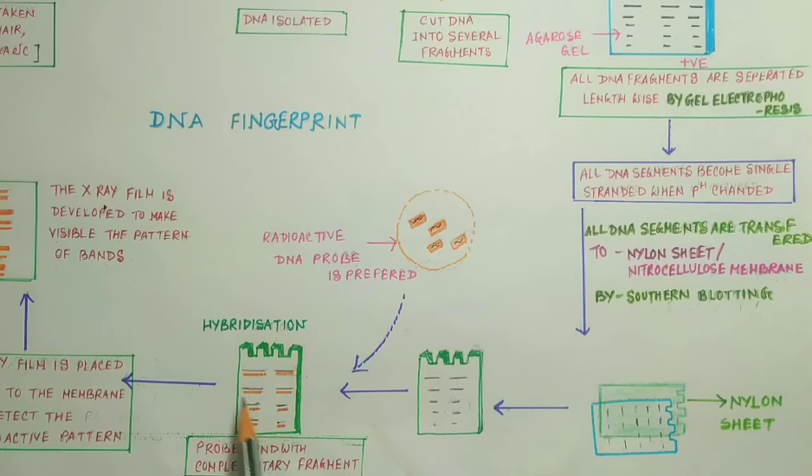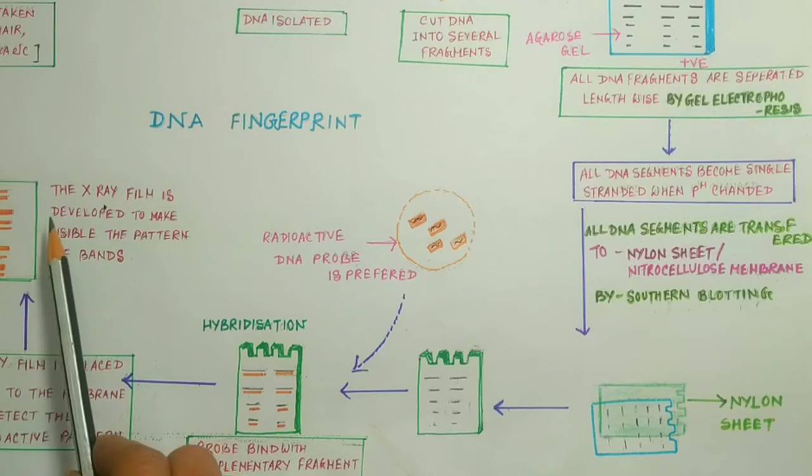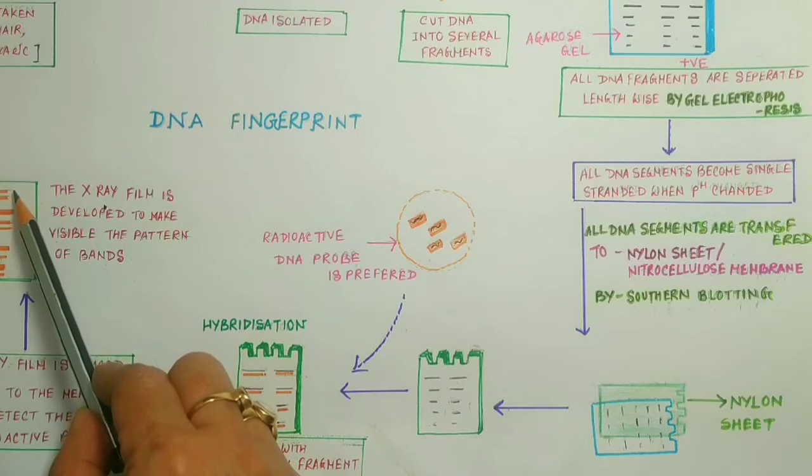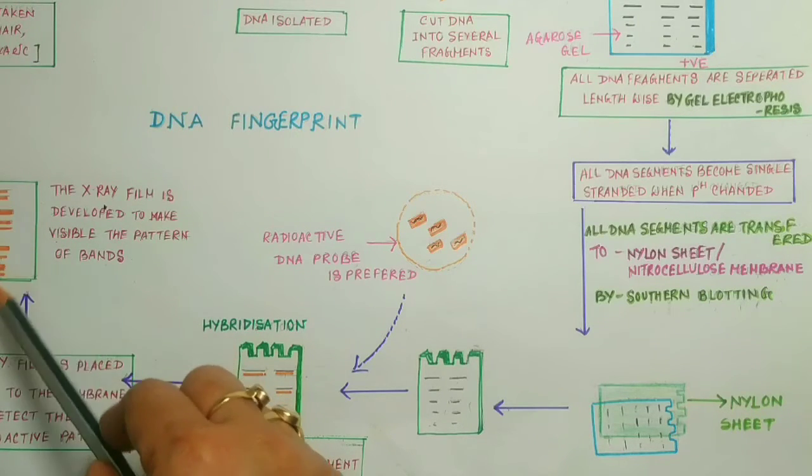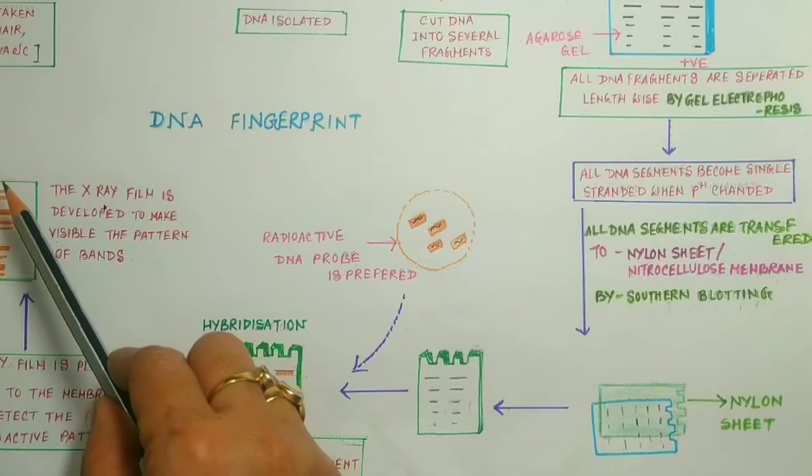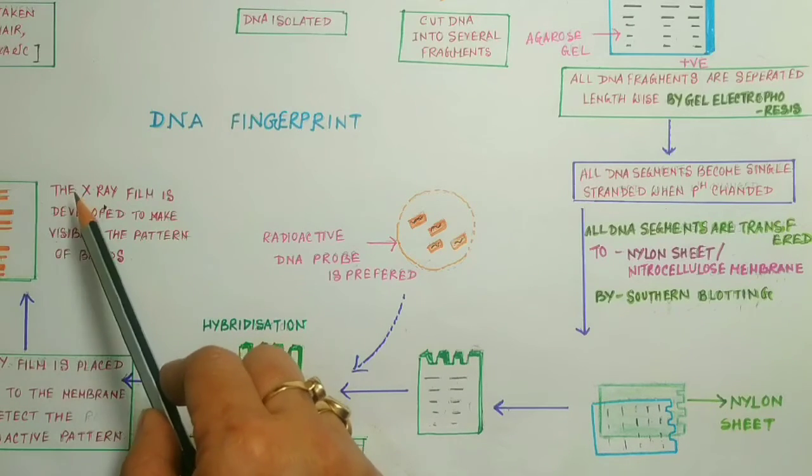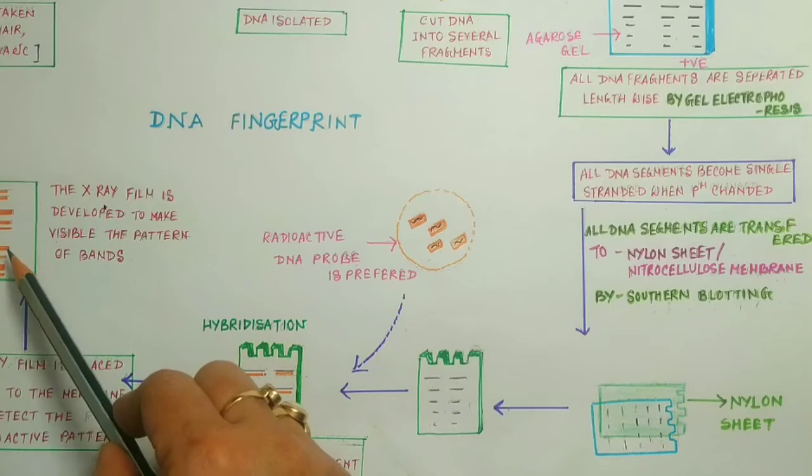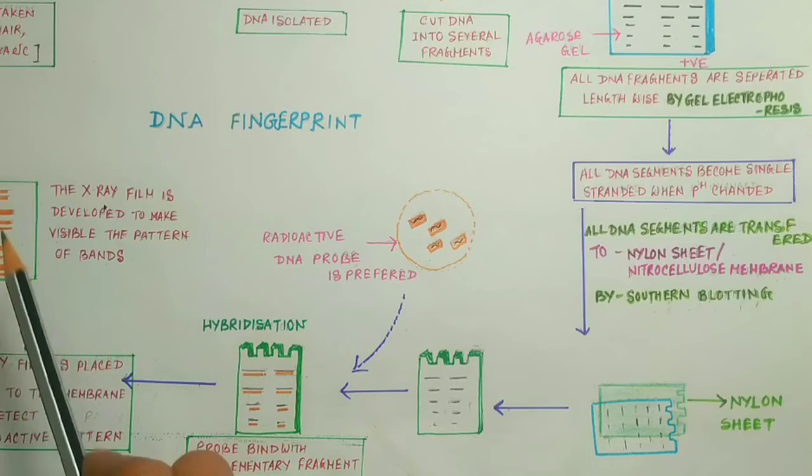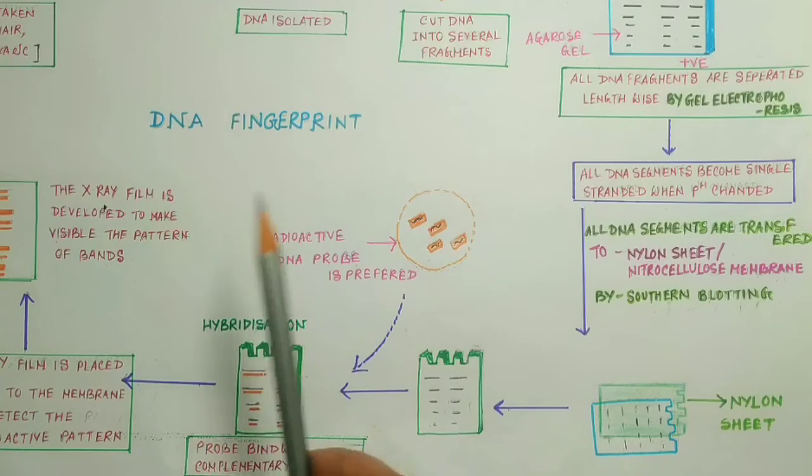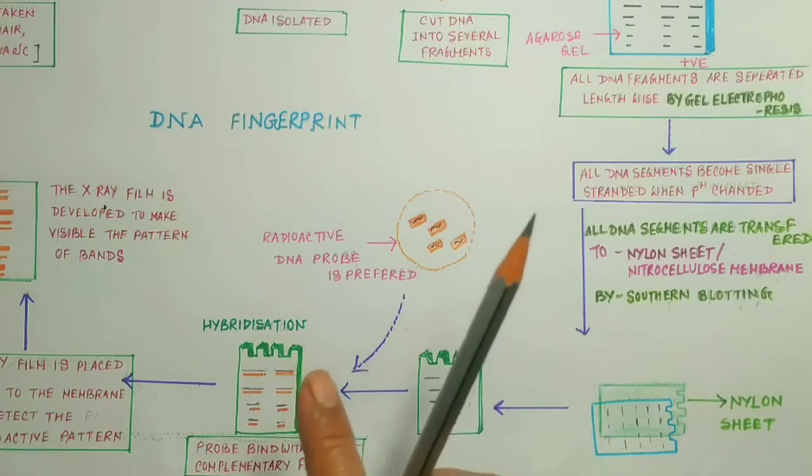Then after that, an X-ray film is placed near this membrane to detect the radioactive pattern. Finally, an autoradiogram is prepared where different size and different length of DNA bands become visible. By counting these DNA bands, we will get the final result. The DNA bands are visible in orange color.